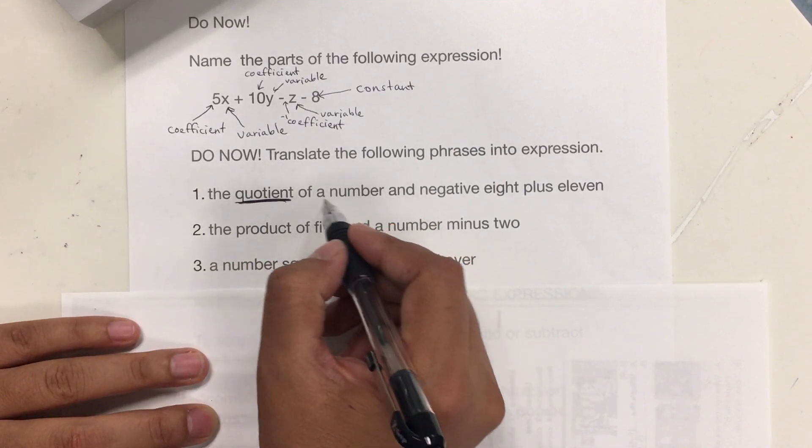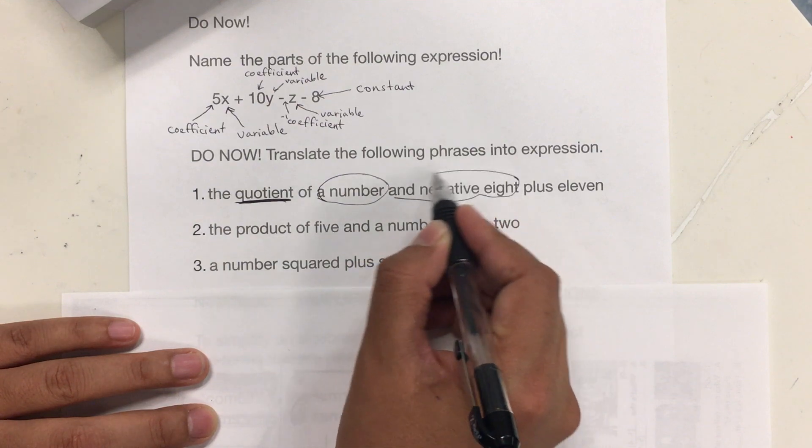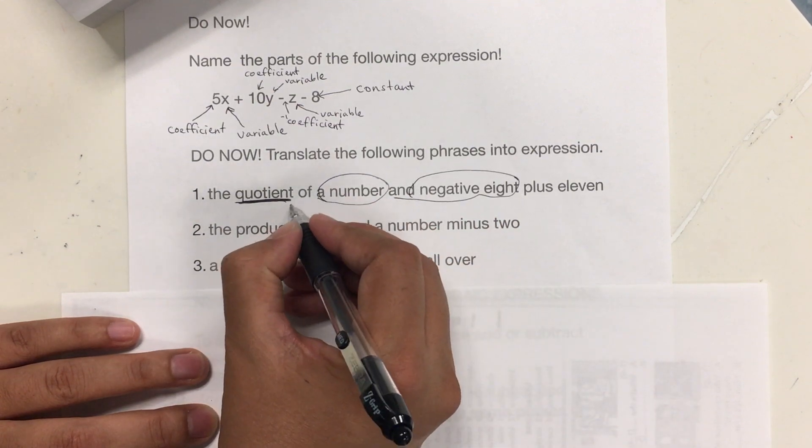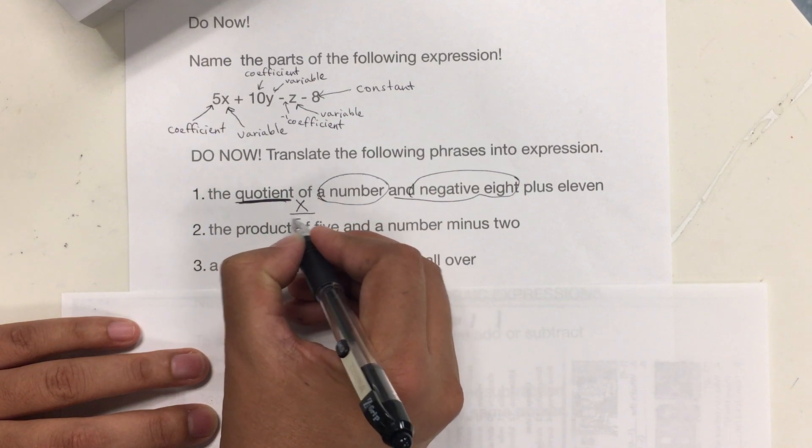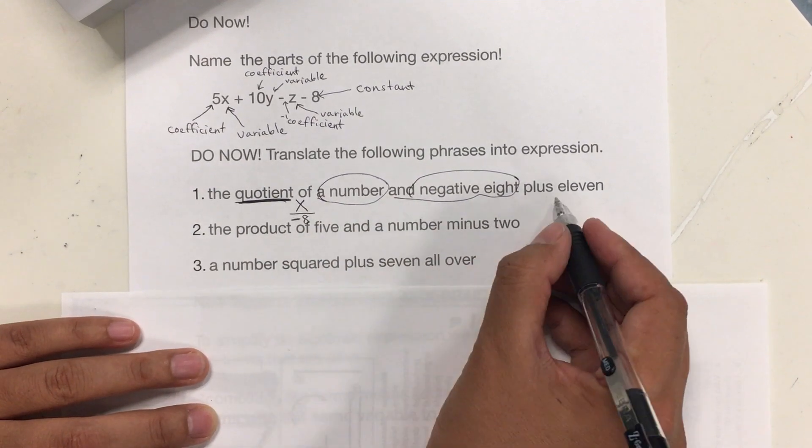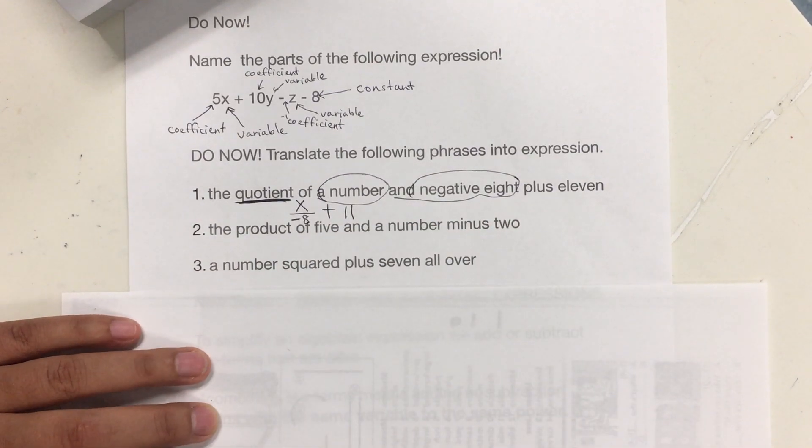And what are we dividing? A number by negative 8. So, a number divided by negative 8 plus 11. So, that's how the expression will look.